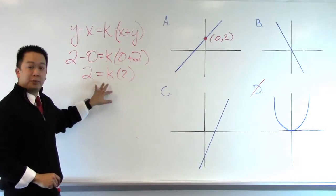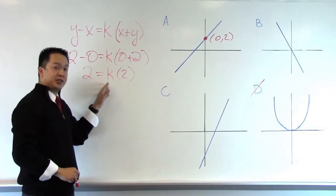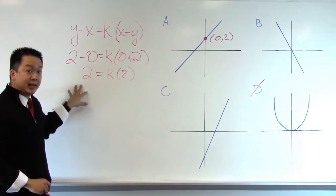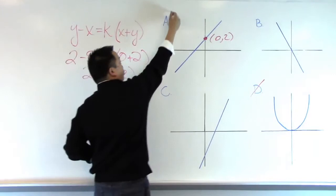So then we ask ourselves, is there any possible number that's positive and not 1, that when you multiply it to 2, you actually get back a 2. And there isn't one. Therefore, this equation does not work, and so we can eliminate answer choice A.